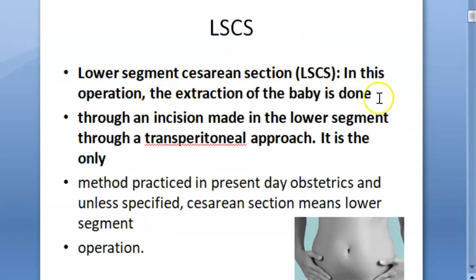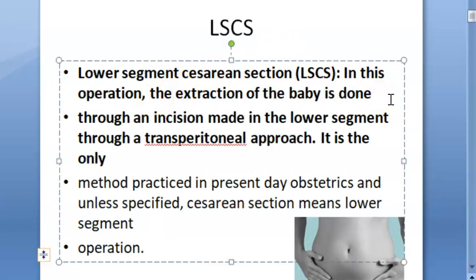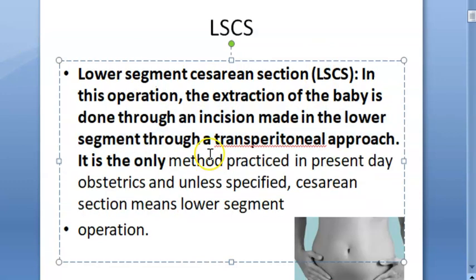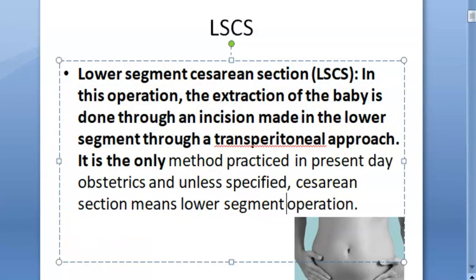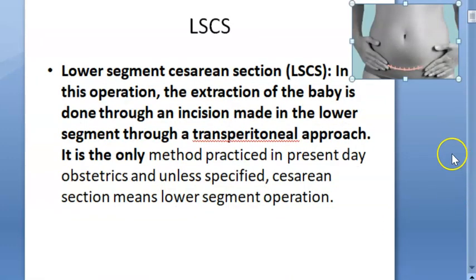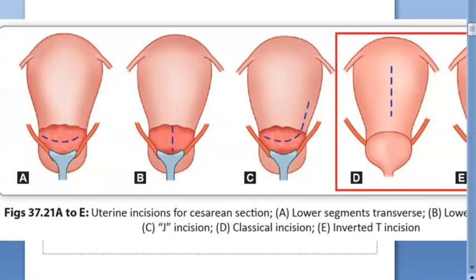In lower segment cesarean section, you extract the baby by making an incision through the lower segment of the uterus via a transperitoneal approach. This is the only approach practiced in modern obstetrics. Classical section is only considered when the lower segment is not approachable. The lower segment is preferred because it does not undergo contraction and relaxation, so the wound will be stronger and will not give way in the next pregnancy.